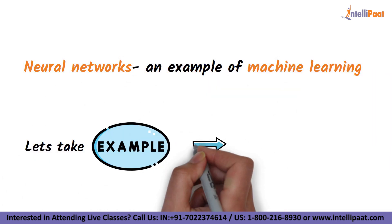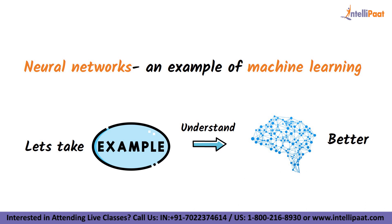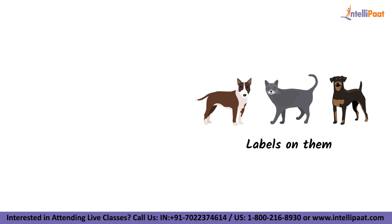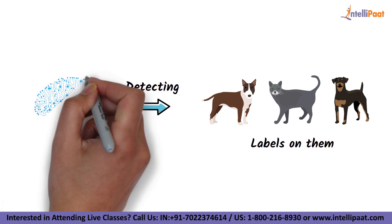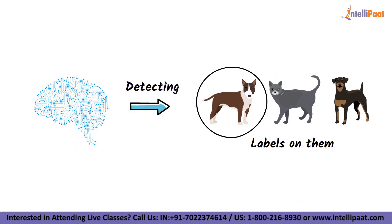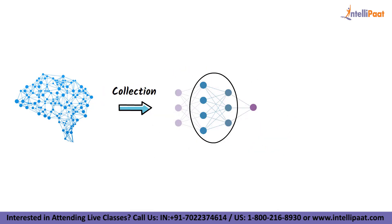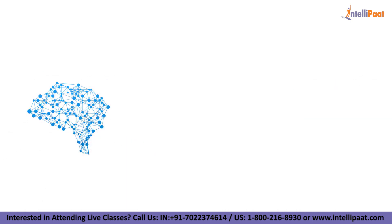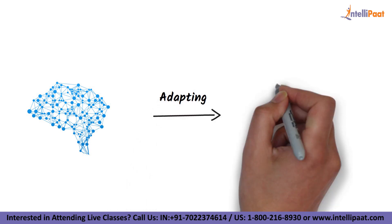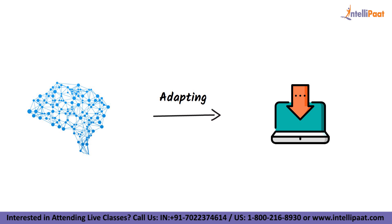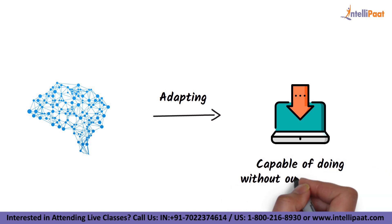Let's take an example to understand neural networks better. By evaluating sample pictures with labels on them, the algorithms in a neural network may learn to detect photographs that contain dogs. Simply said, a neural network is a collection of algorithms that attempt to uncover hidden links in a piece of data. They do it by using a method that is similar to how the human brain works. A neural network is capable of adapting to changing inputs, and it is capable of doing so without our assistance.